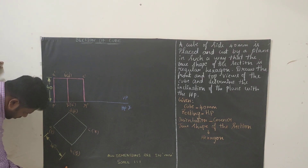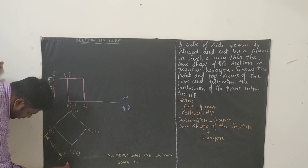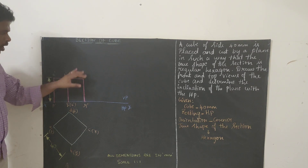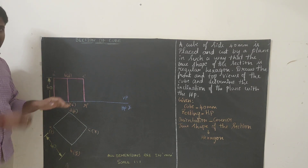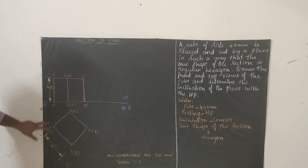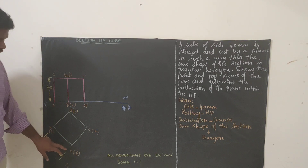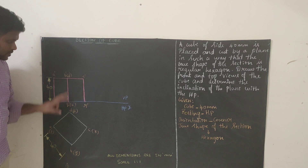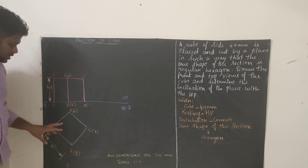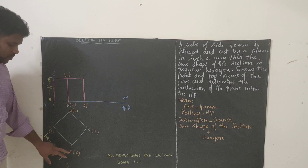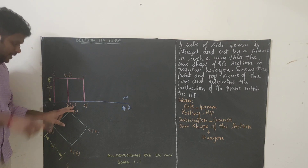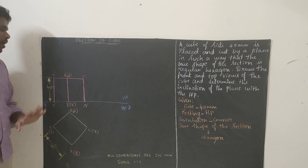For naming the front view: when we see from the front, we can see A and P — so A dash. Top surface is A, B, C, D and bottom surface is P, Q, R, S. We can see B but not D, so B dash (D dash). We can see C, so C dash. We can see P, so P dash. We can see Q but not S, so Q dash (S dash). We can see R, so R dash.